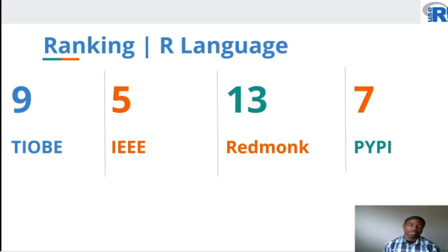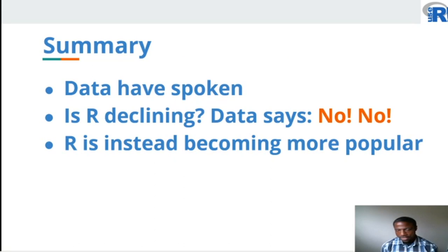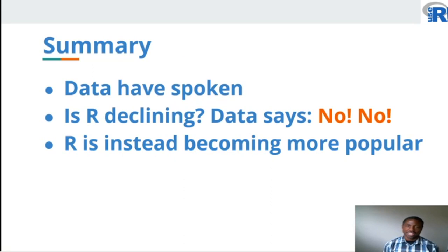R is a popular language when we look at its ranking relative to other languages, with its best ranking being number five according to the IEEE. In summary, the data have shown that R remains popular. Is R declining? The data say no. R is not only popular, but it's becoming more popular.